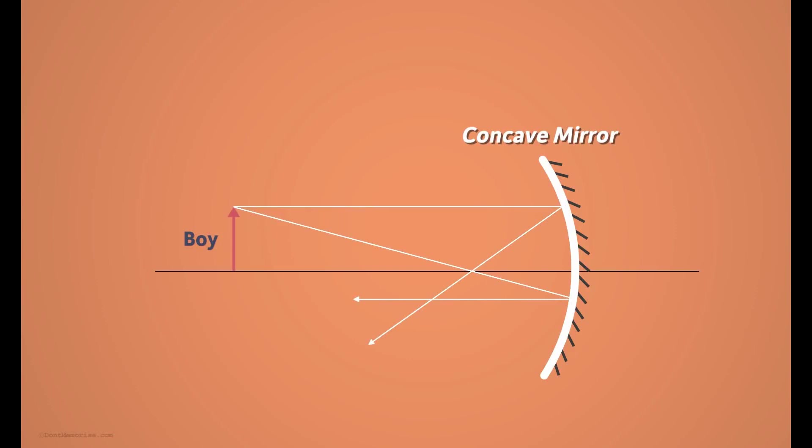We see that after reflection, each ray is travelling in a certain direction. Note that here as well, each ray obeys the law of reflection. What difference did you notice here compared to the plane mirror reflection?